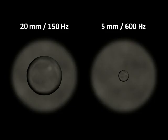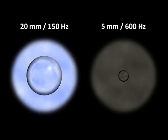A perfectly spherical bubble will resonate at a single frequency, which is determined by the bubble's radius. A 20mm bubble produces a 150Hz frequency and sounds like this. Whereas a 5mm bubble produces sound at 600Hz.